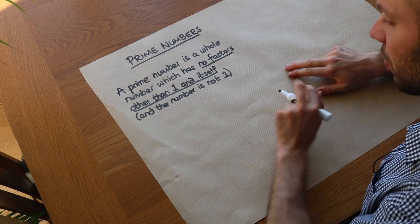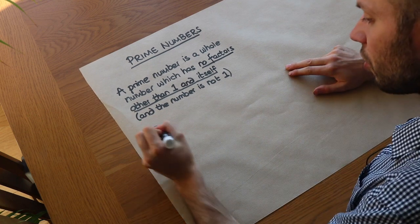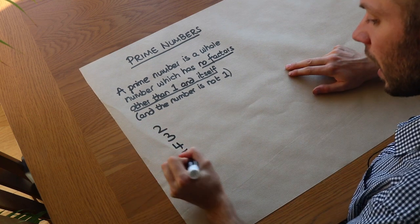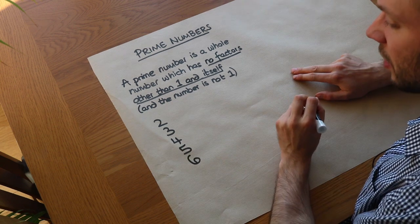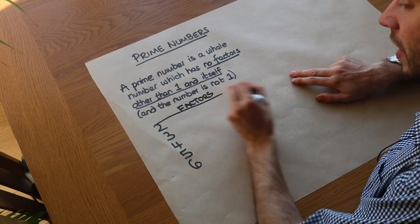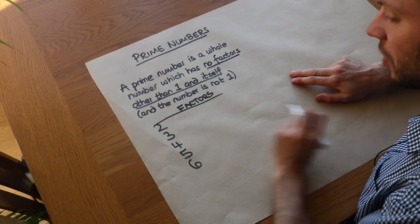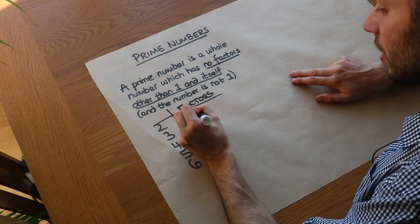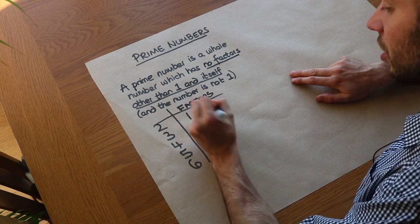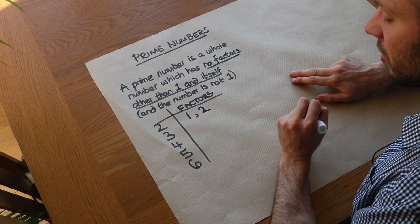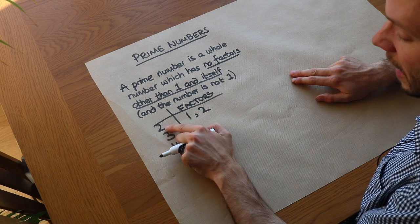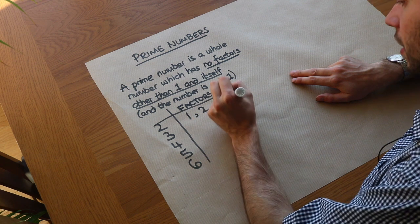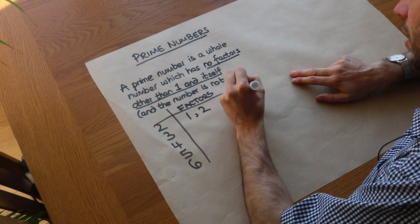Let's see whether certain numbers are prime: two, three, four, five, six. Consider the factors of two: one goes into two, and two goes into two. Two doesn't have any factors other than one and itself, so two is prime.